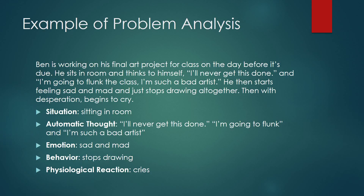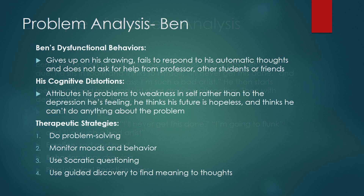In this situation, Ben is sitting in his room. His automatic thoughts are: I'll never get this done, I'm going to flunk, and I'm such a bad artist. His emotion is sad and mad. His behavior is that he stops drawing altogether, and his physiological reaction is that he starts to cry. Analyzing the problem: Ben's dysfunctional behavior is giving up on his drawing, failing to challenge his automatic thoughts, and not asking for help from his professor, other students, or friends. His cognitive distortions include attributing his problems to weakness in himself rather than to depression, and thinking his future is hopeless.